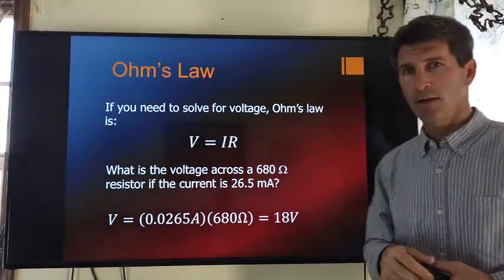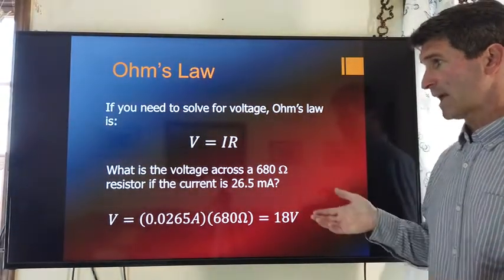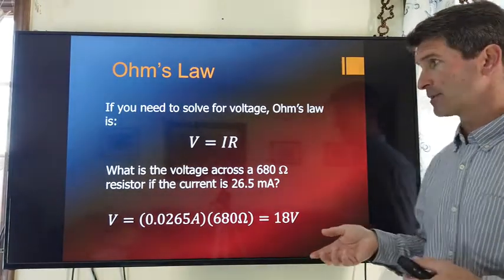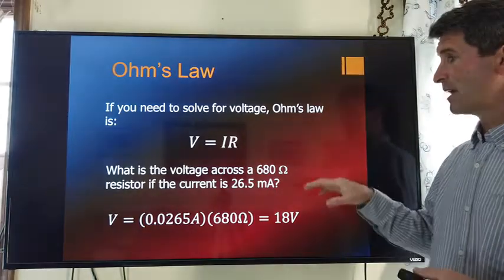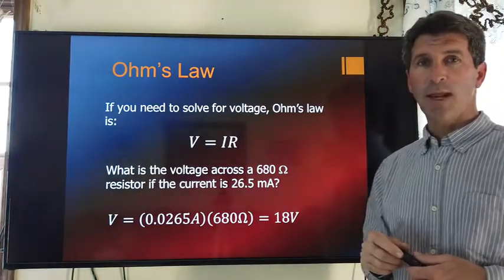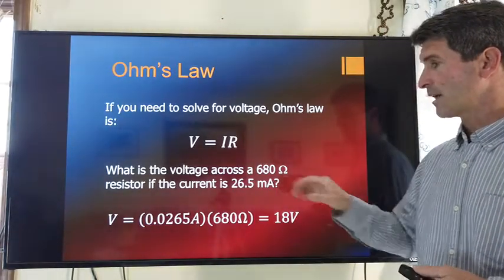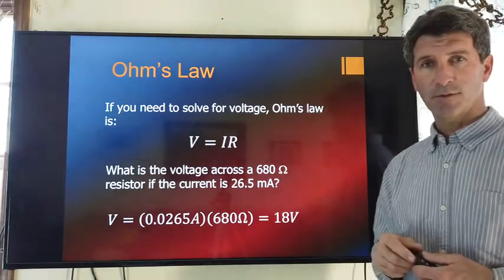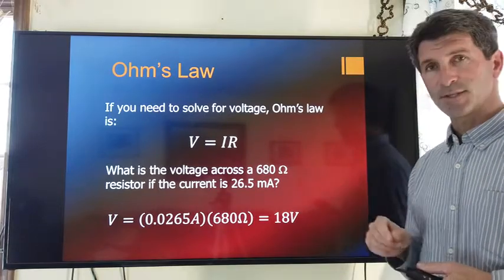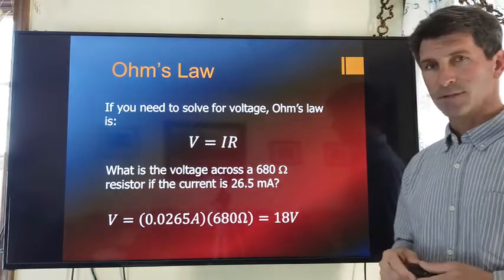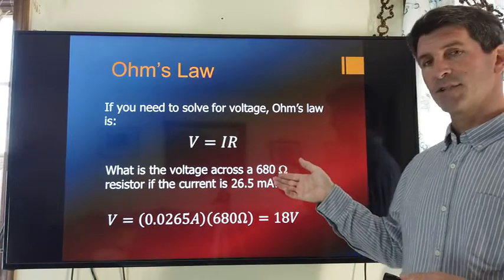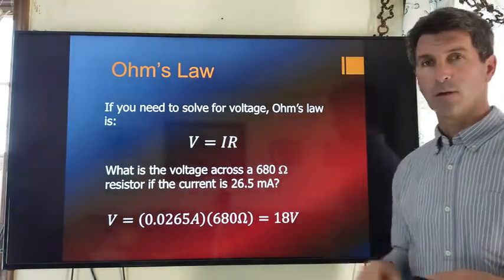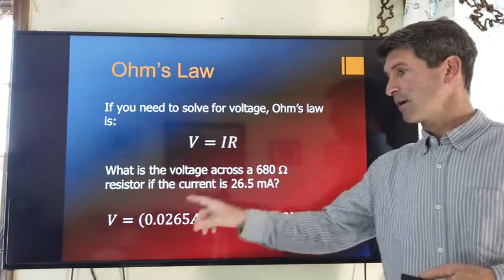Now, again, V equals IR is very important because it allows us to solve for one of the unknowns, if you know two of the other properties. For instance, let's say we have a 680-ohm resistor, and it's carrying 26.5 milliamps. Well, what is the potential difference across this? We know what the resistance is. We know how much current is flowing across there. And given that the resistance is the amount of voltage per current, we can solve for the voltage as V equals IR.